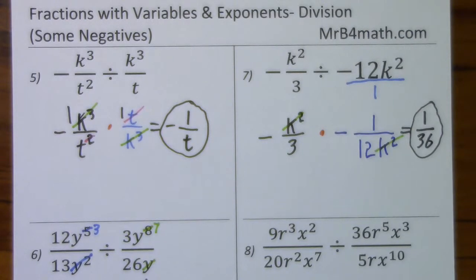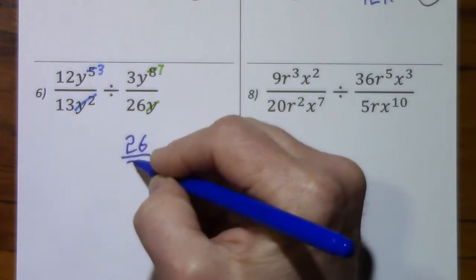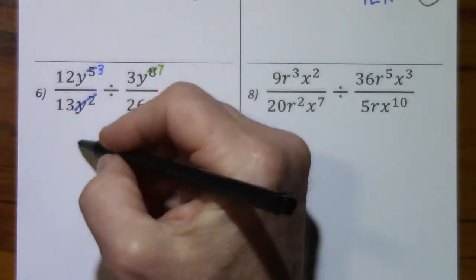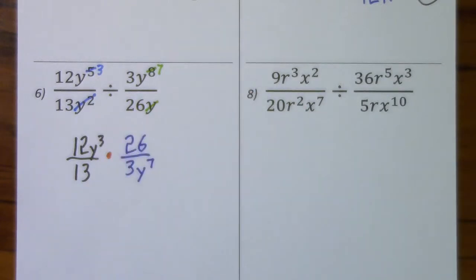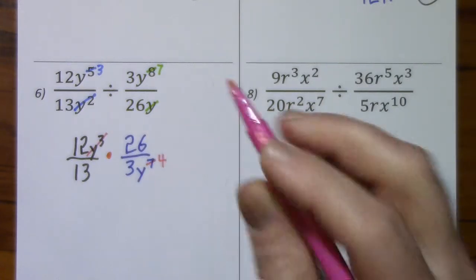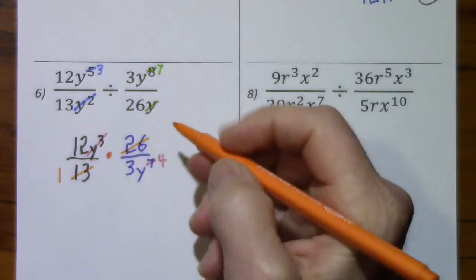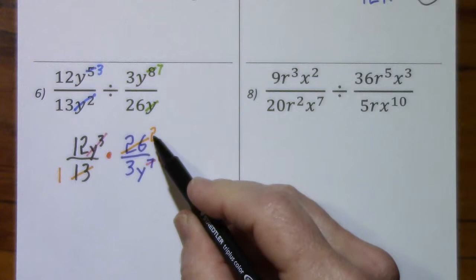Now that we've simplified all that we can, we'll take the reciprocal of the divisor and proceed as we have in the previous examples. So we flip the fraction by which we're dividing, change division to multiplication. We'll bring this down — we have 12y to the third over 13. We'll reduce wherever possible. Y to the third means we can subtract 3. And with 13 and 26: divide by 13, divide by 13. This 4 is an exponent for the y, so you certainly can't do any canceling here.